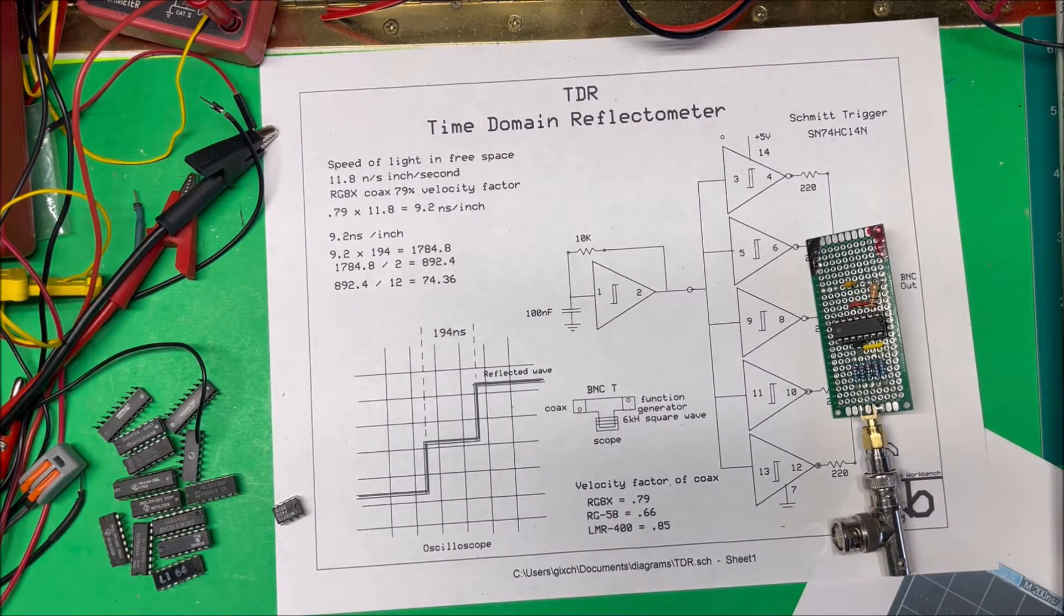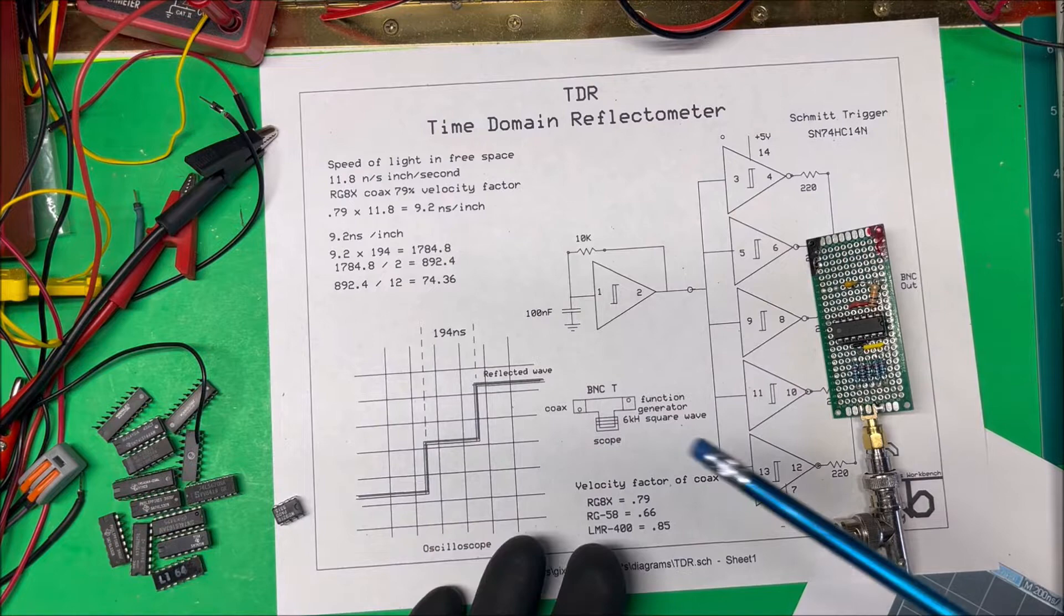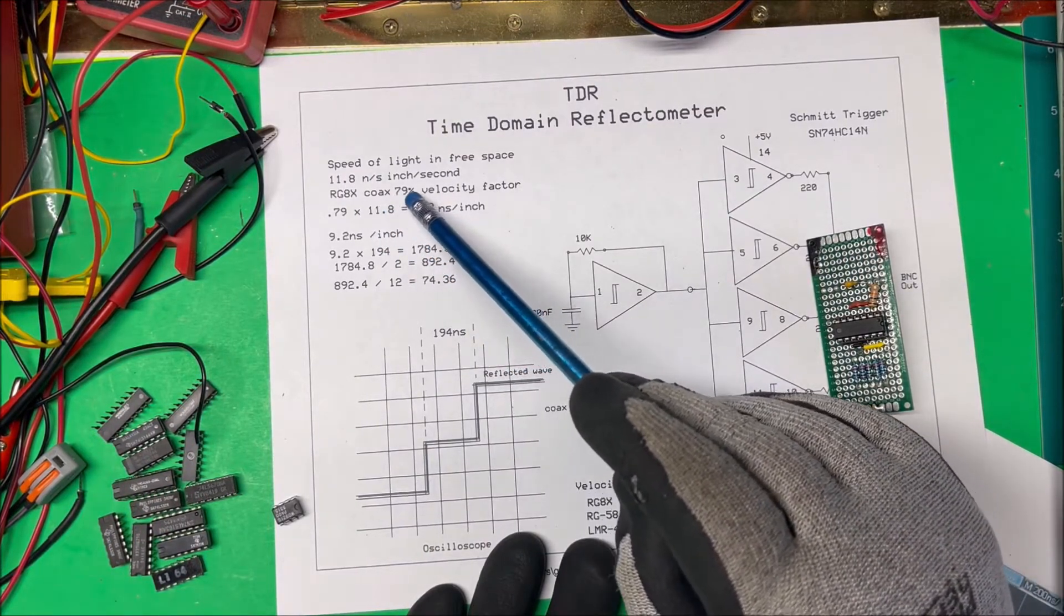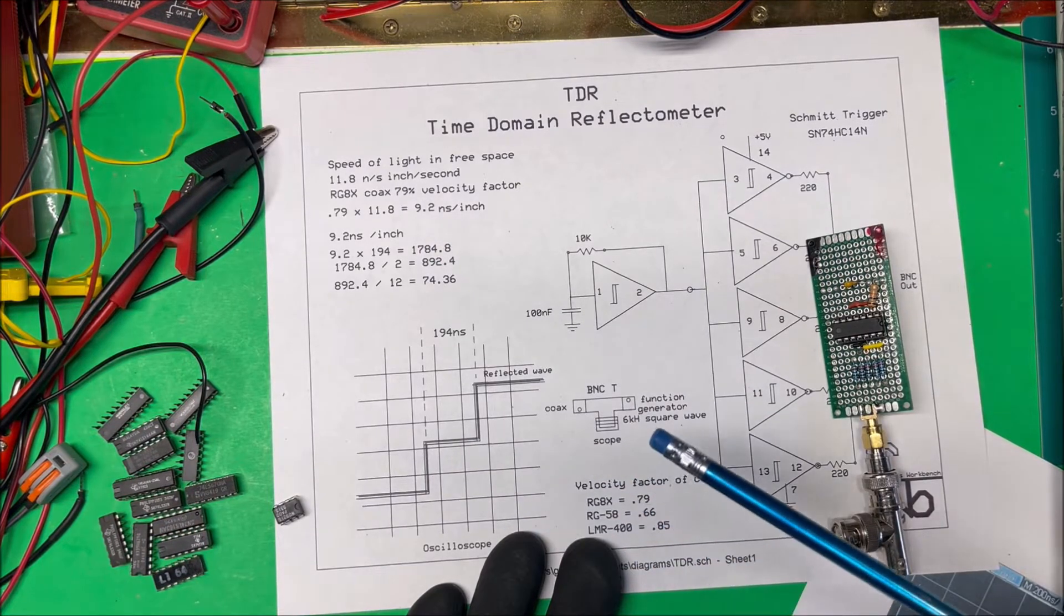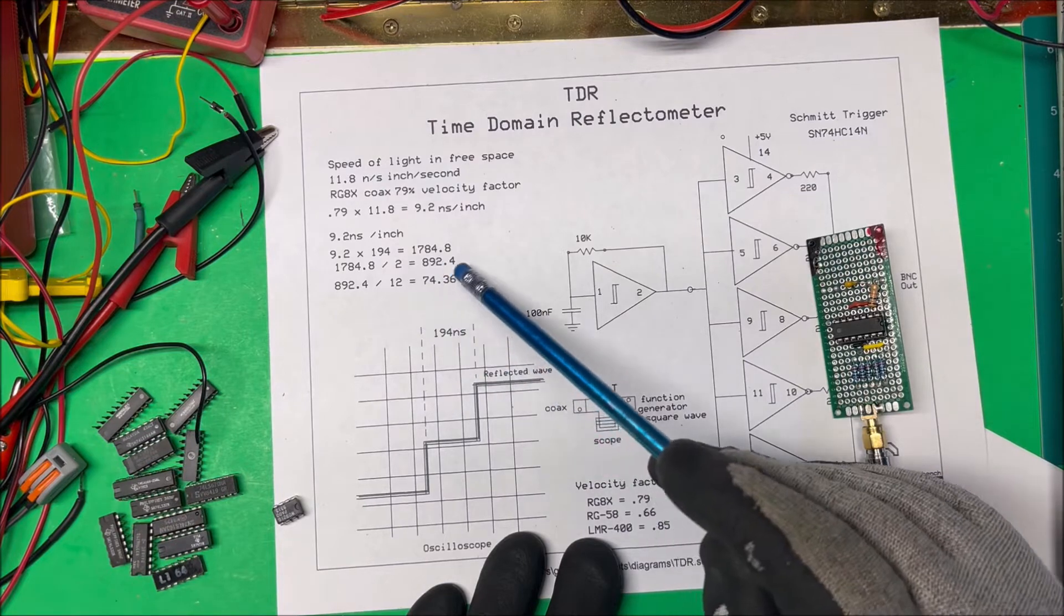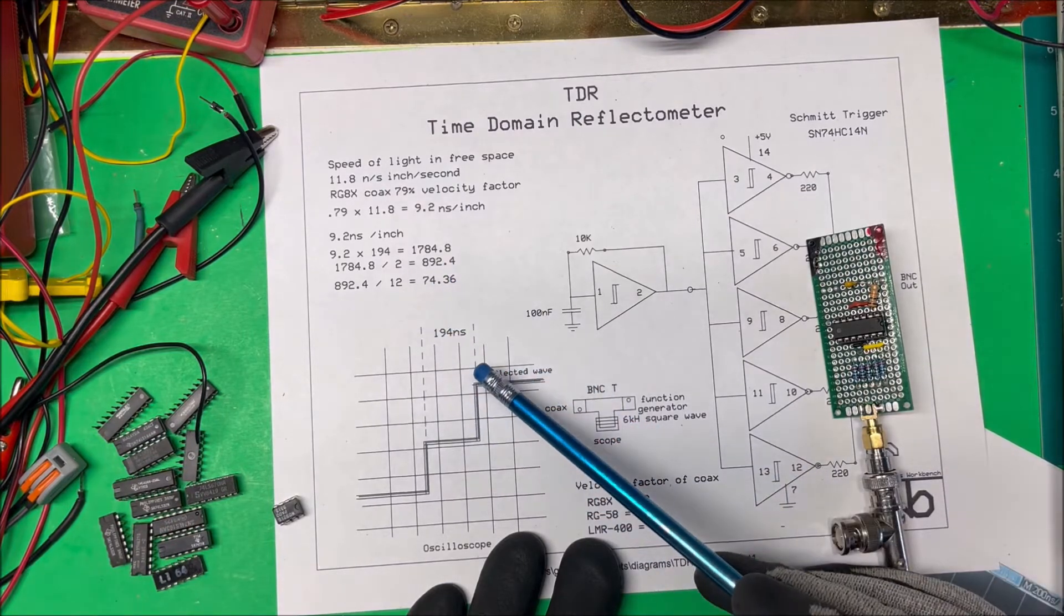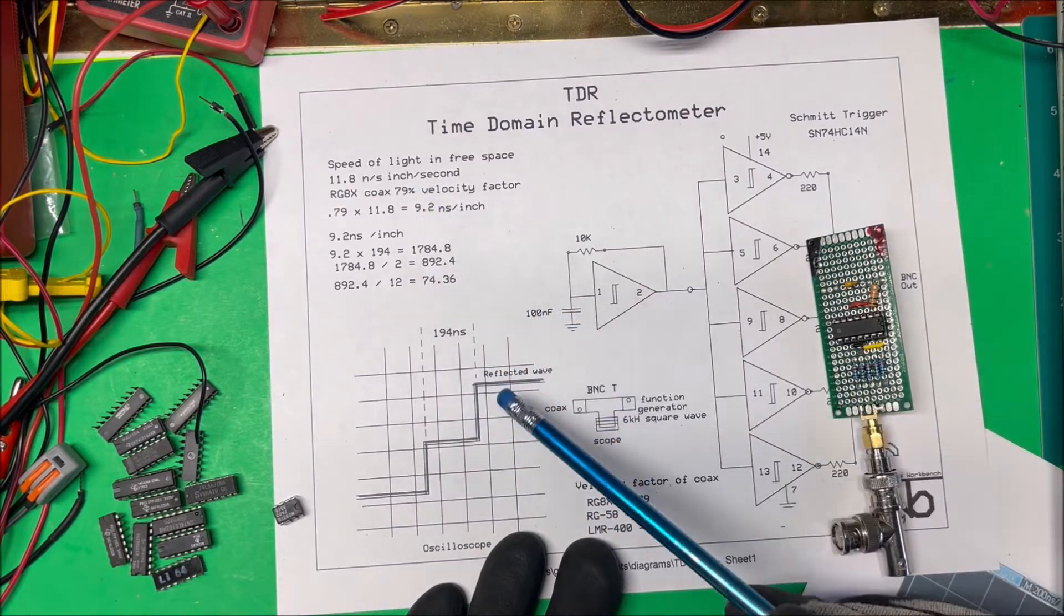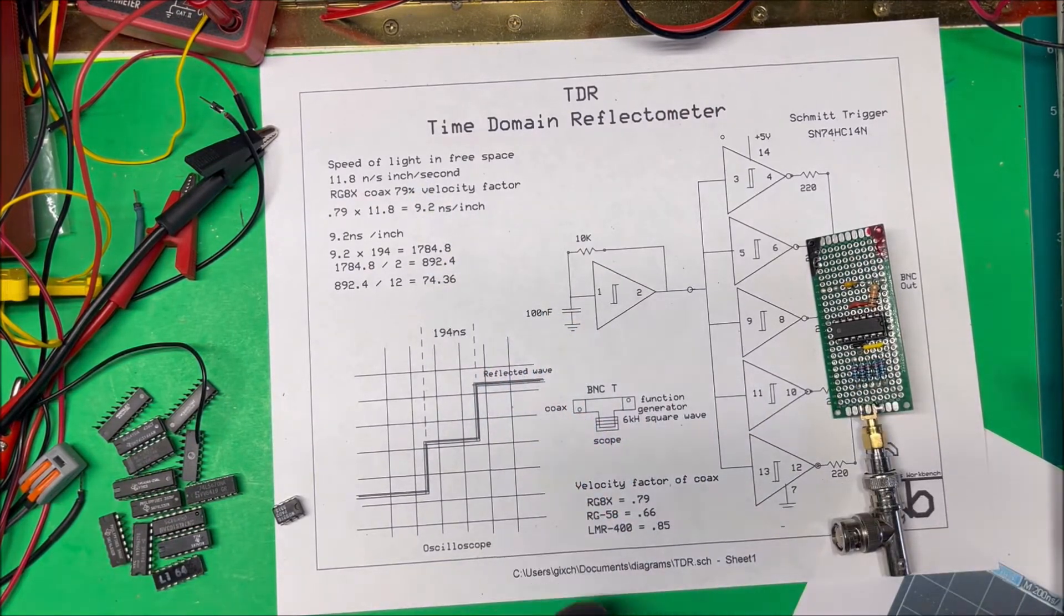So that happens to be a 75 foot cable. Now, you know, this is from the spec sheet, the velocity factor. Now what you can do is just, if you know the exact distance, the length of the cable, you can determine your own velocity factor. So it could be a little bit more accurate but this is pretty good.